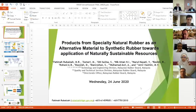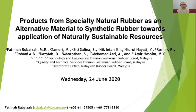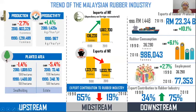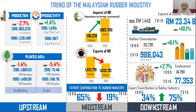Thank you. My presentation today is on products from specialty natural rubber as an alternative material to synthetic rubber, towards application of a naturally sustainable resource. First, some overview of the Malaysian rubber industry. Dividing the sector into three main activities, we see that on the downstream side, most CAGR figures show a positive trend related to export of rubber products, rubber consumption, employment, and export contribution. Malaysia ranks 8th in world market value of rubber products with about 3% contribution, most of it — 75% — from rubber gloves.